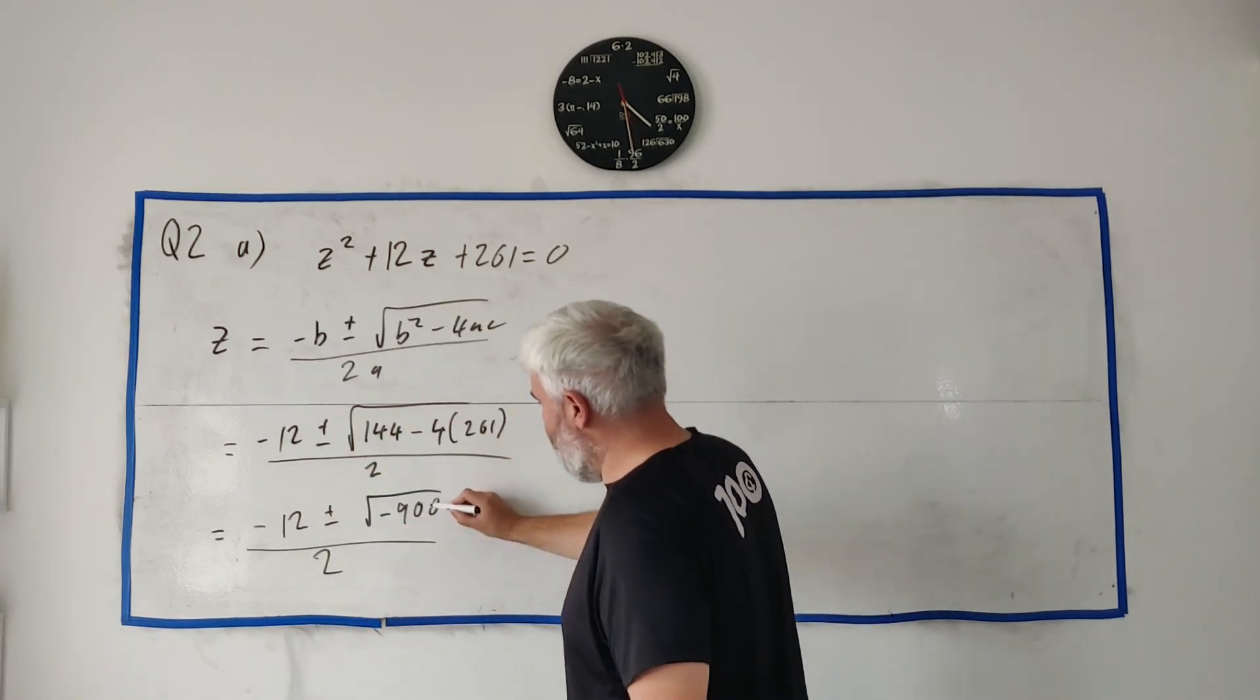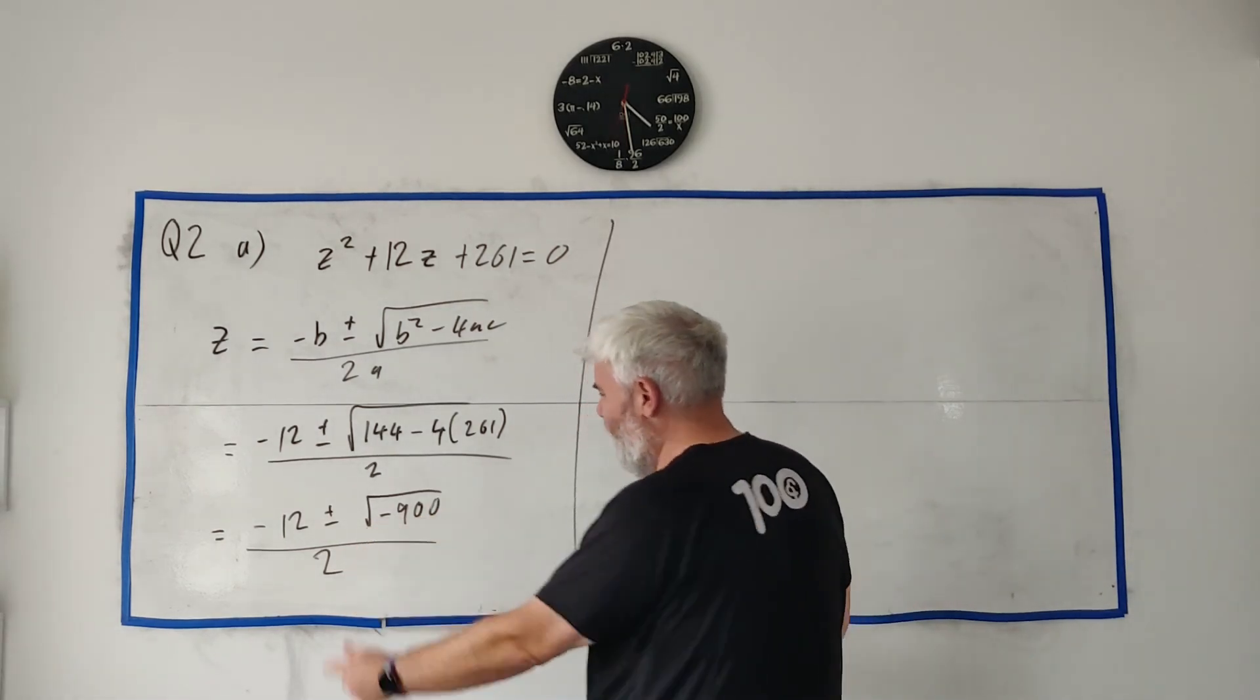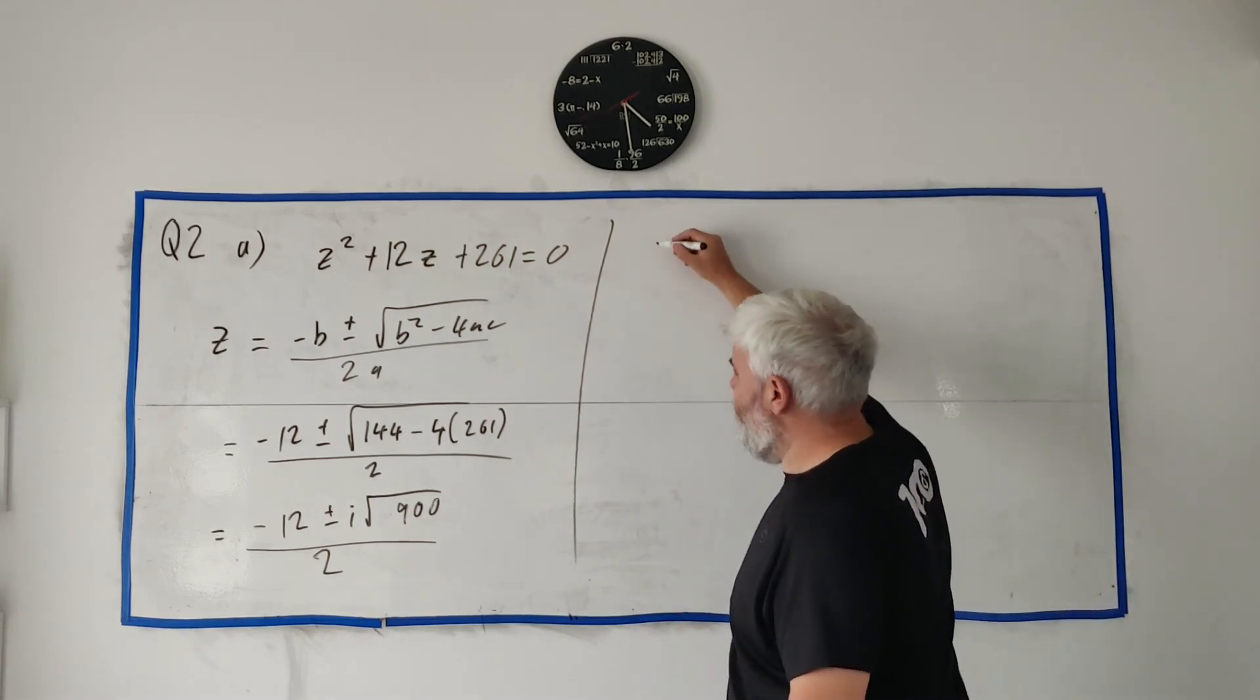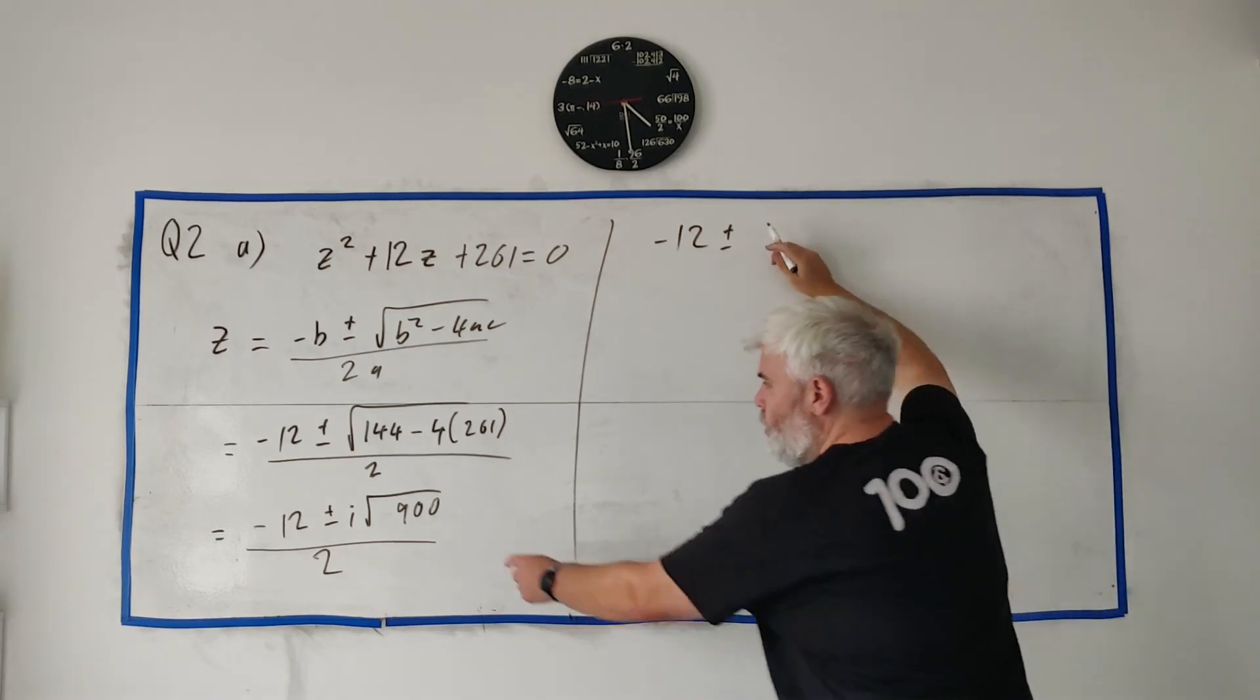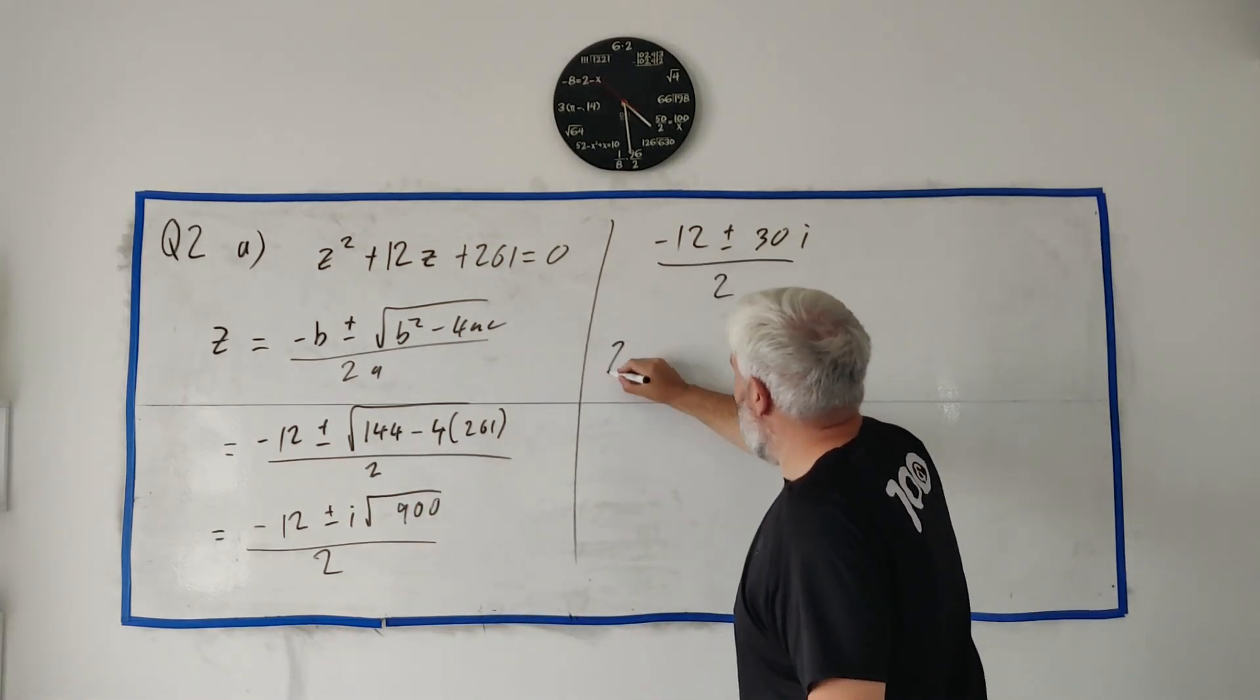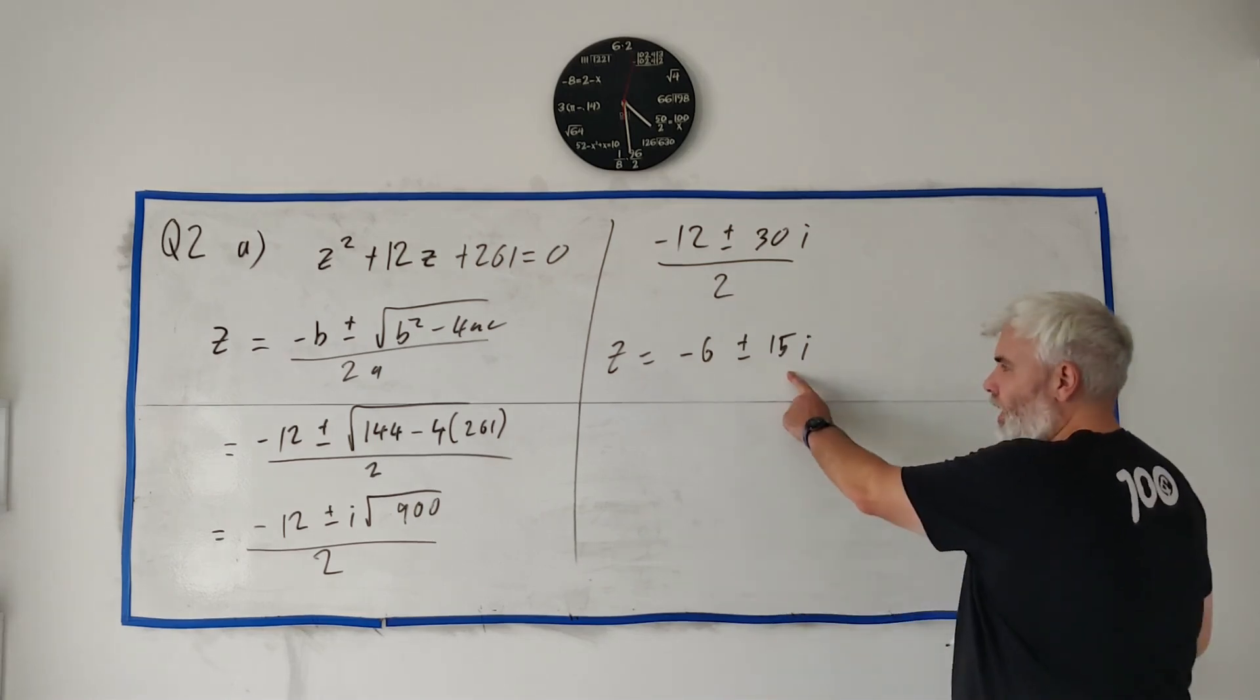So we'll get minus 12 plus or minus the square root of minus 900 all over 2. Now, here's our problem. Square root of a minus - that's where our I is going to come from. So how do we do this? We just take the minus out and let an I appear. So this becomes minus 12 plus or minus the square root of 900 is 30, 30 times I. The I has appeared from the minus. That's all over 2.